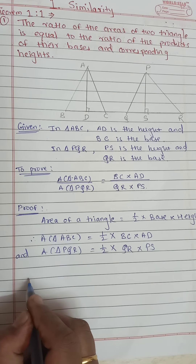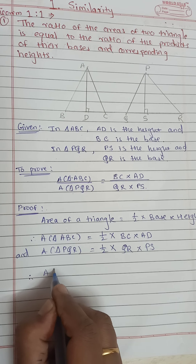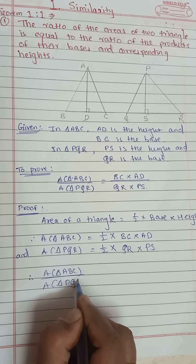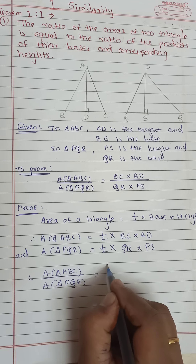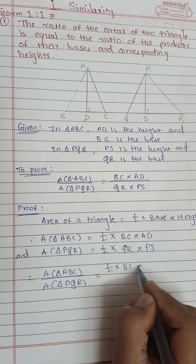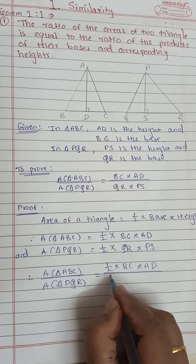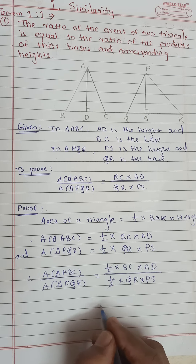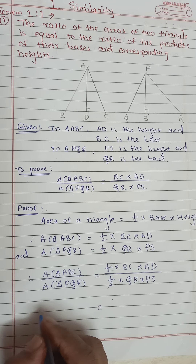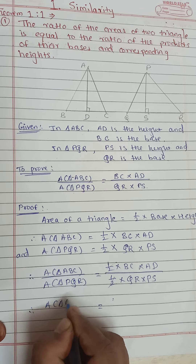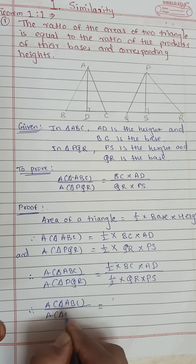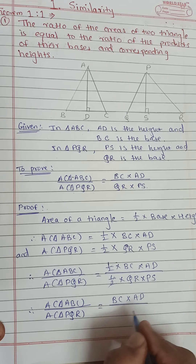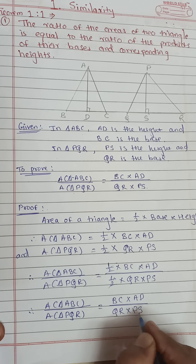Now we will find out the ratio of the areas of these two triangles. Area of triangle ABC upon area of triangle PQR is equal to (half into BC into AD) upon (half into QR into PS). The half cancels out, and we get the required answer: area of triangle ABC upon area of triangle PQR is equal to BC into AD upon QR into PS. And this is what we had to prove.